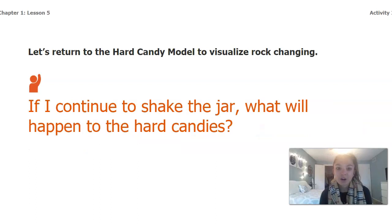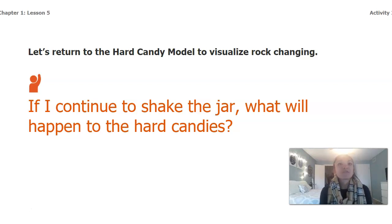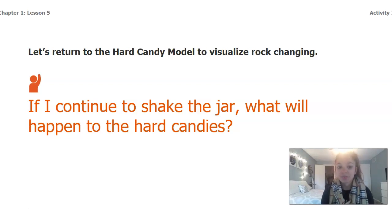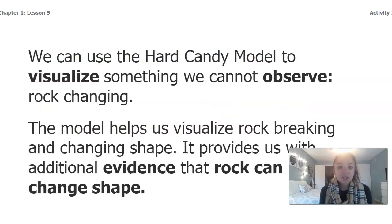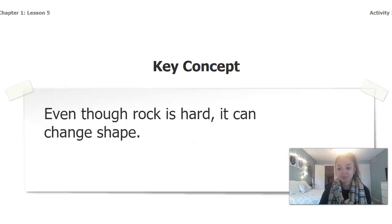If we think back to our hard candy model and visualize the rock changing — if we continue to shake the jar — the candies are going to continue to change shape, breaking into even smaller pieces and becoming more rounded instead of jagged. Over time, if we continue shaking the jar, we continue to see a change in our candy, or in our rocks. We can use the hard candy model to visualize something we cannot observe, which is rock changing. The model helps us visualize rock breaking and changing shape, and provides additional evidence that rock can change shape. Even though rock is hard, it can still change shape — it may take a really long time, but over time it will.